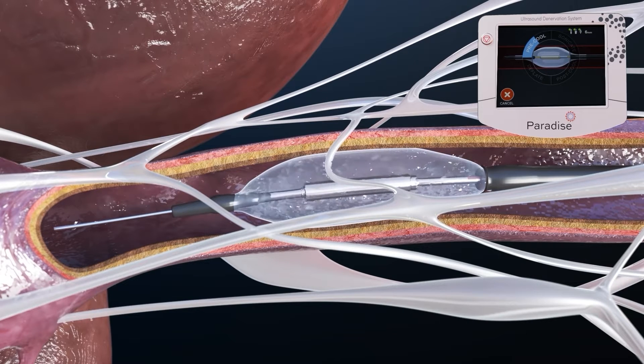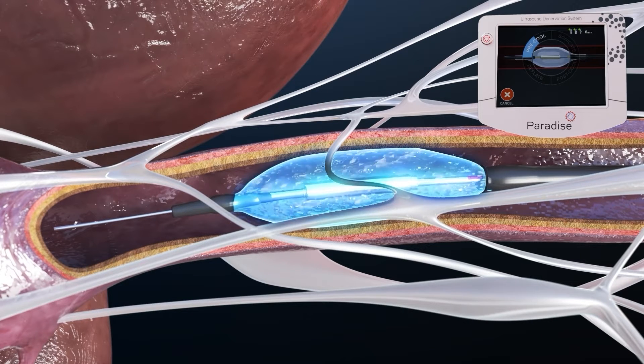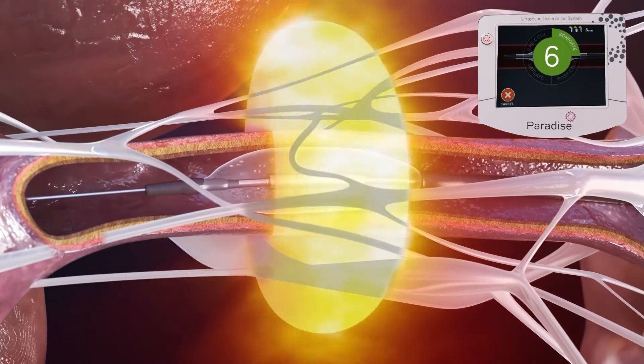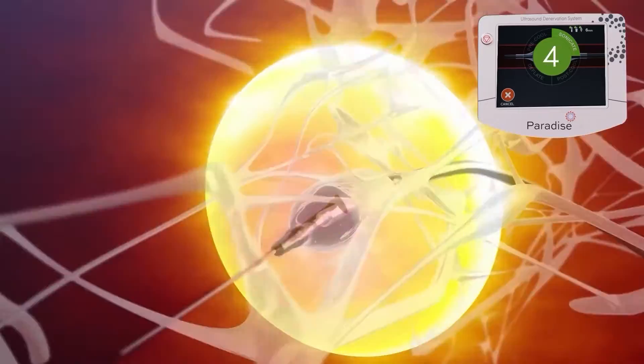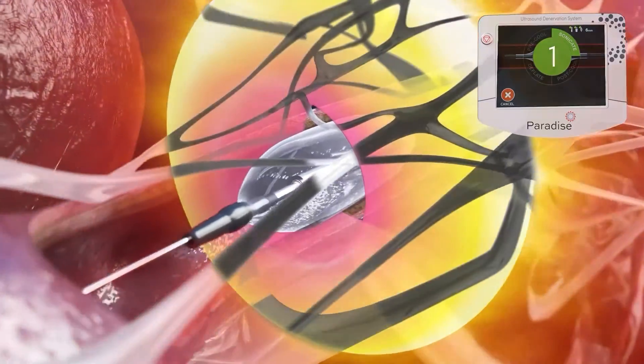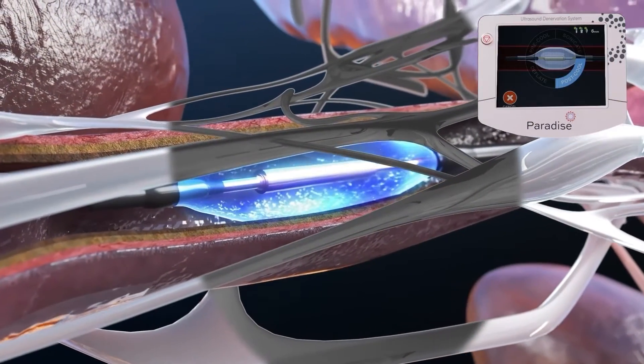The sonication process begins with the hydro cooling system, which circulates sterile water through the balloon to protect the arterial wall. Each sonication lasts just seven seconds, enabling an efficient procedure while reaching the majority of the nerves surrounding the main renal artery.